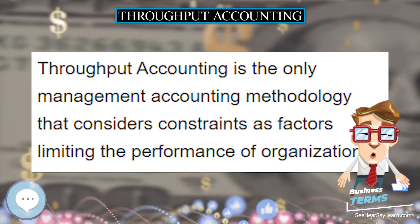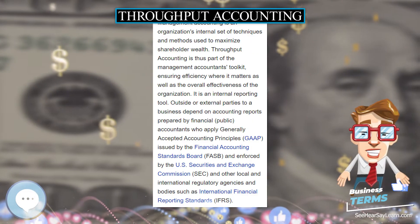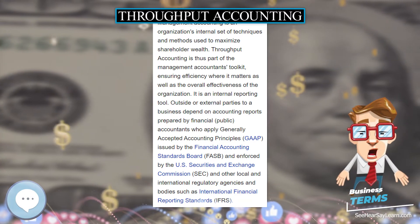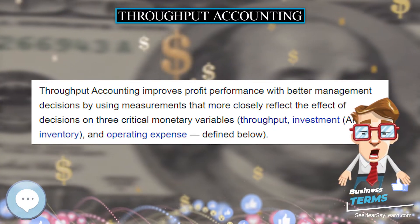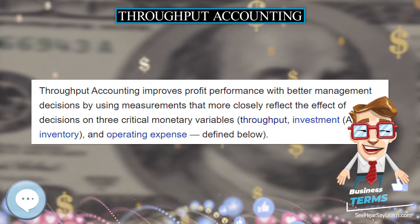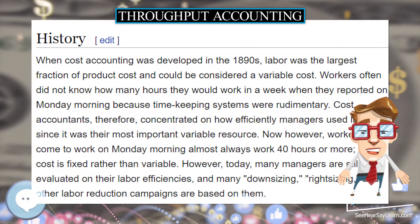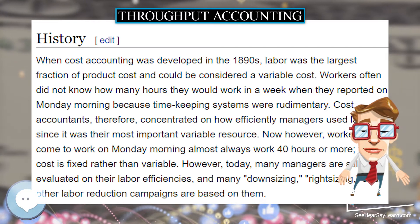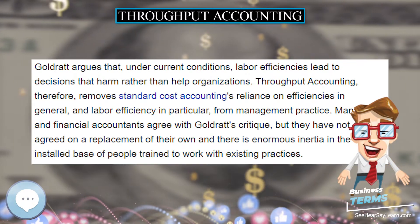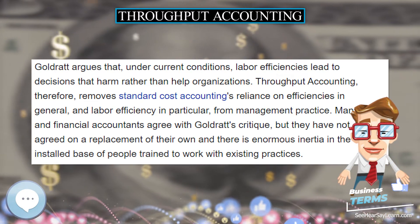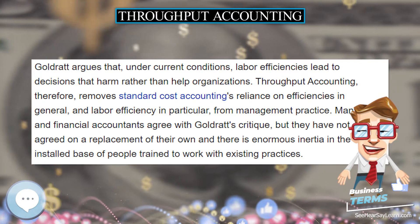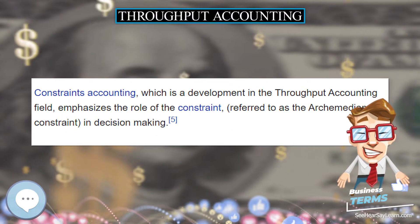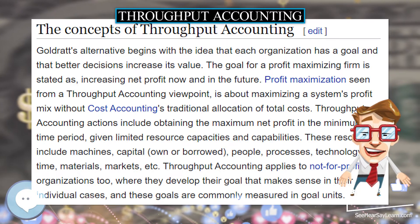Outside or external parties to a business depend on accounting reports prepared by financial, public accountants who apply generally accepted accounting principles (GAAP), issued by the Financial Accounting Standards Board (FASB), and enforced by the U.S. Securities and Exchange Commission (SEC), and other local and international regulatory agencies and bodies such as International Financial Reporting Standards (IFRS).